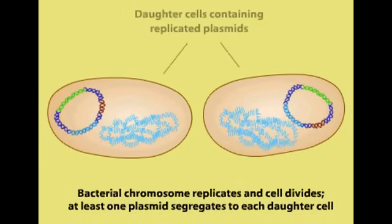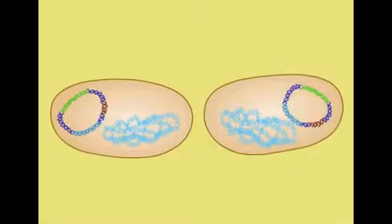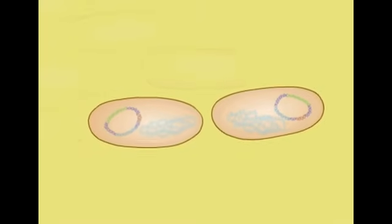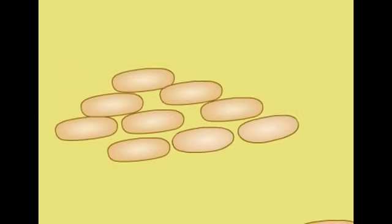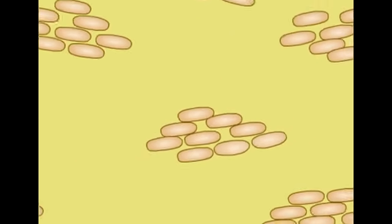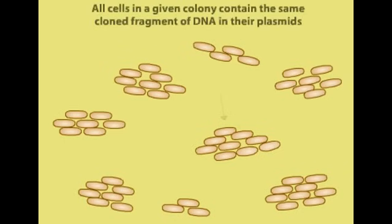As the plasmids replicate and the host cells multiply, the number of copies of the recombinant plasmid is greatly amplified. The multiple daughter cells form a colony or clone. Because all the host cells in a colony are derived from a single cell, they all contain copies of the same recombinant plasmid with its fragment of foreign DNA.